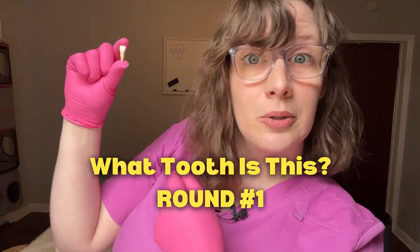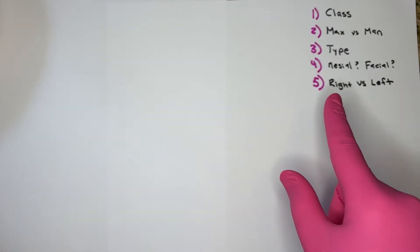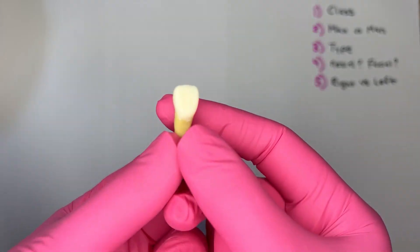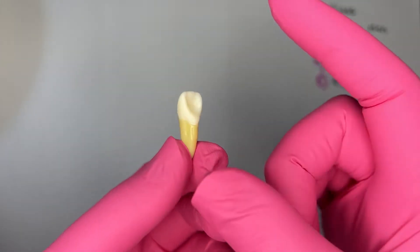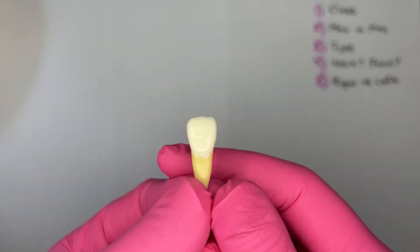What tooth is this? Round one. Let's ID this tooth using the five steps. Step number one, what class of tooth is this? With this flat biting edge and no cusps, I know it's an incisor.